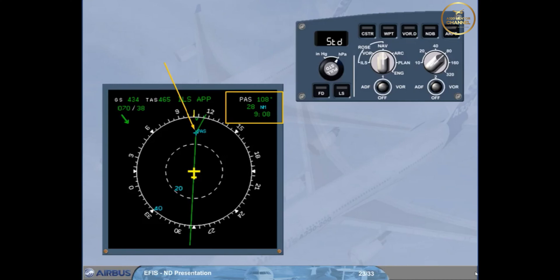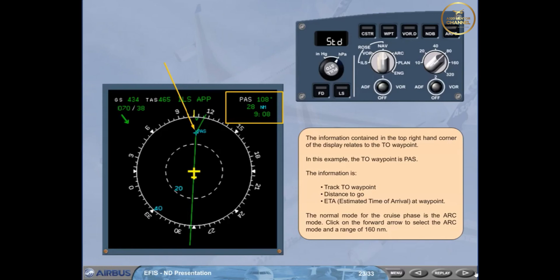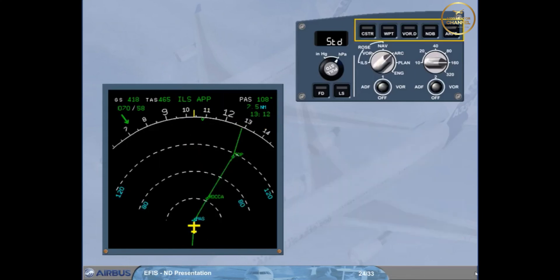The normal mode for the cruise phase is the arc mode. Click on the forward arrow to select the arc mode and a range of 160 nautical miles. Using the push buttons at the top of the EFIS control panel, additional information can be displayed. For example, airports that are in the displayed range. Select airport. A green light illuminates in the push button. On the display, the airports contained in the aircraft's database and within the area are shown. This is a useful feature when considering diversions.